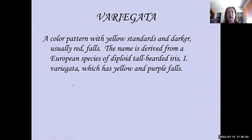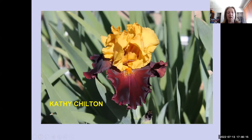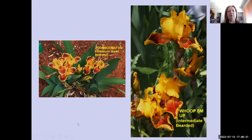Variegata is a color pattern that came out of a species, with yellow standards and darker — usually red — falls. The name is derived from a European diploid tall bearded species, Iris variegata, which has yellow and purple falls. Kathy Chilton is one of our classic American variegatas with gold standards and red-rust falls. Zumbumifu, a miniature dwarf bearded, has the same coloring, as does Whoop Them Up, an intermediate bearded, with yellow standards and red falls.